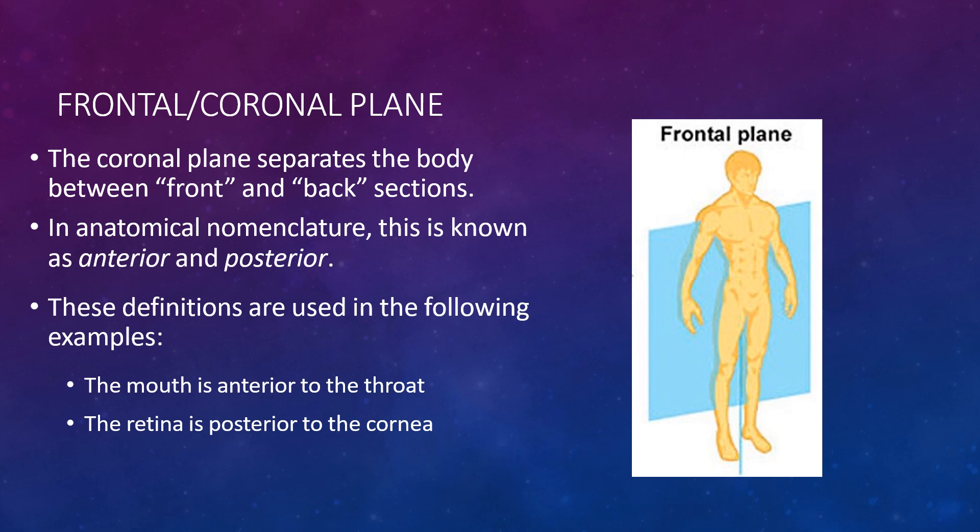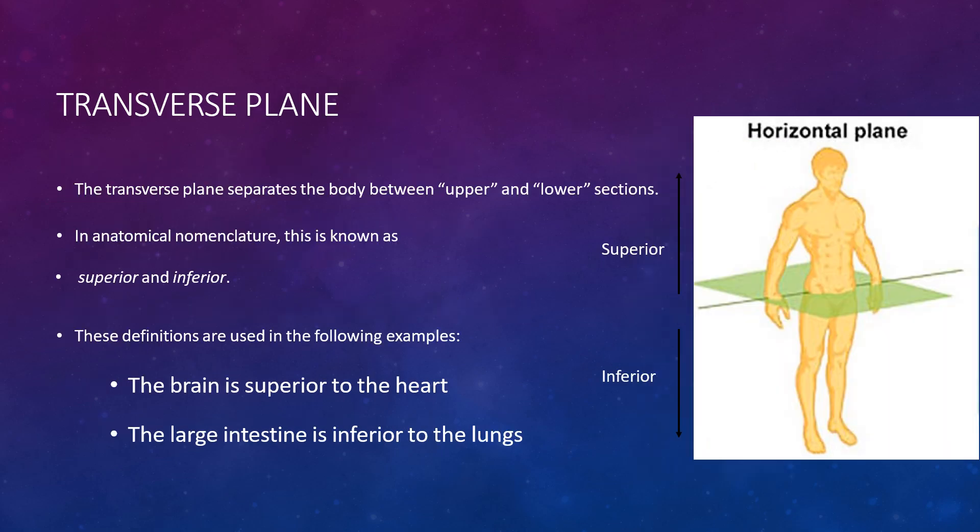The transverse plane separates the body between upper and lower sections. In anatomical nomenclature, this is known as superior and inferior. For example, the brain is superior to the heart, and the large intestine is inferior to the lungs.